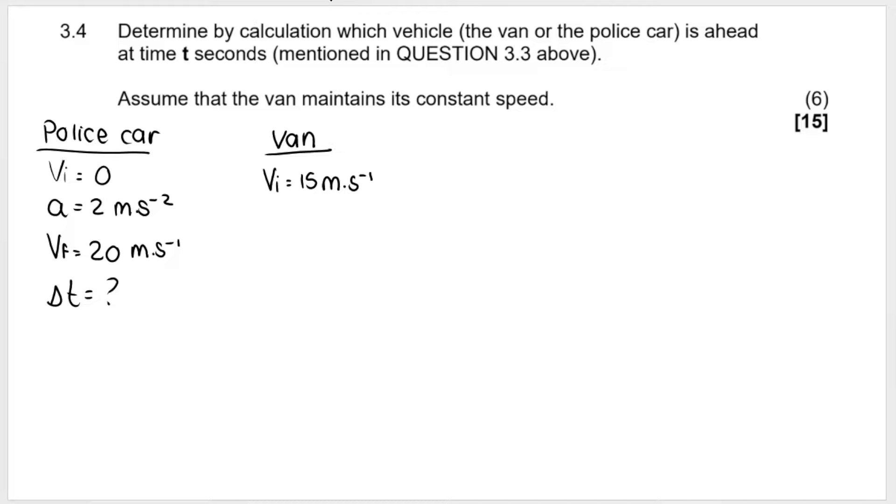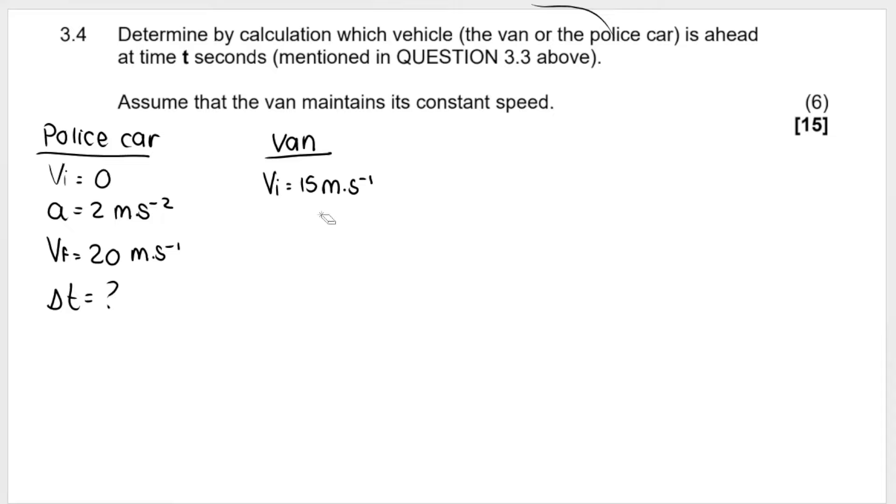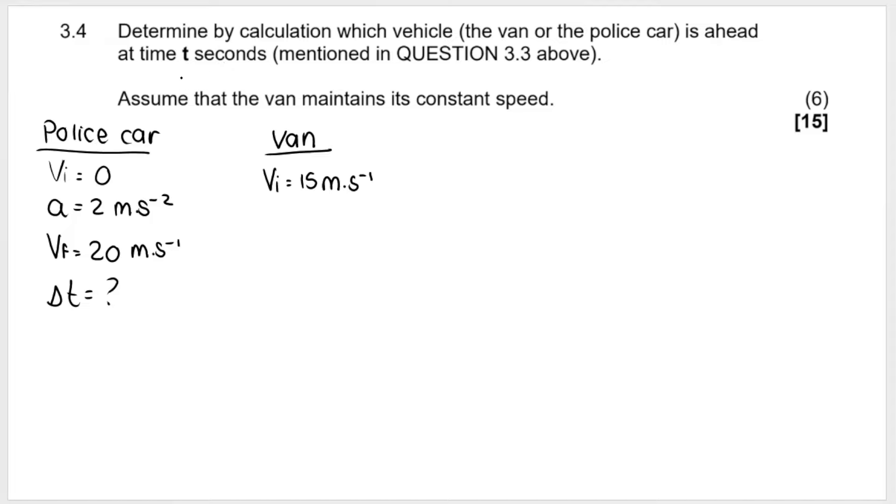3.4 is 6 marks and they say determine by calculation which vehicle, van or police car, is ahead at the time T seconds, the one that we calculated just before. So remember, we calculated time and we said time was 10 seconds. So they want to know after 10 seconds, who is ahead? Is it the van? Is it the police car? So we have variables for each of them. And then they also tell me, assume that the van maintains its constant speed. Now, this sentence is so important over here. If a vehicle is maintaining its constant speed, it means that the initial velocity and the final velocity will both be 15 meters per second to the right or in the positive direction. It also means that the van will have an acceleration of zero. So if it's not speeding up, if it's not slowing down, if it's got constant speed, uniform speed, it means that acceleration is zero. So we're going to have to do two calculations. We're going to have to look for displacement or distance for both of them and then see which one is ahead.